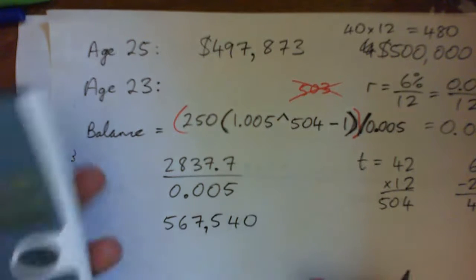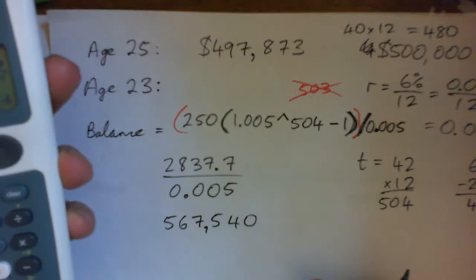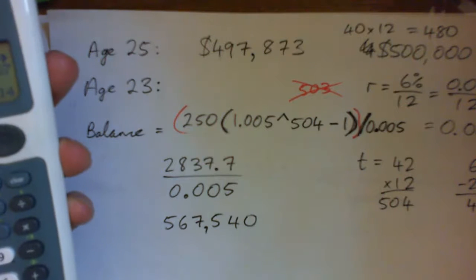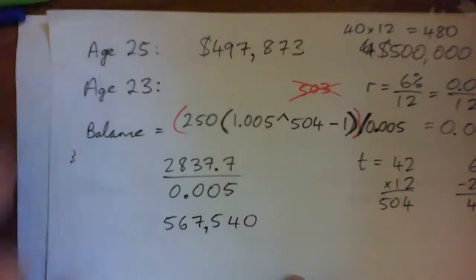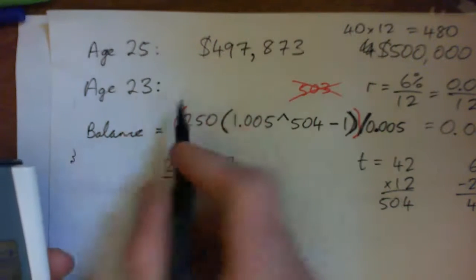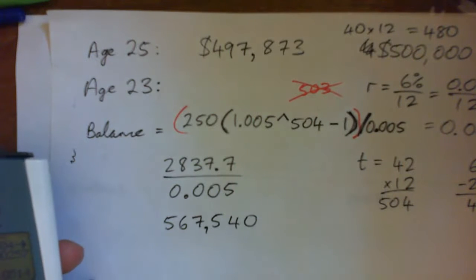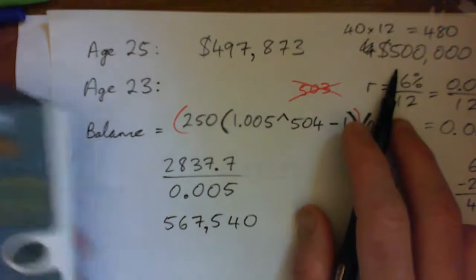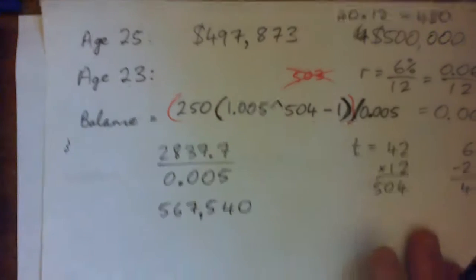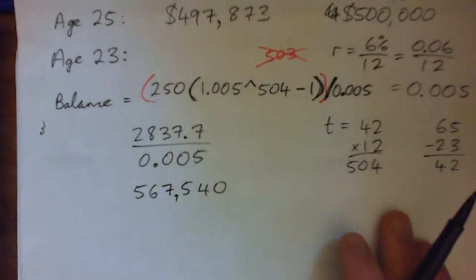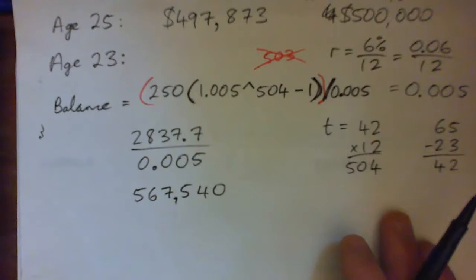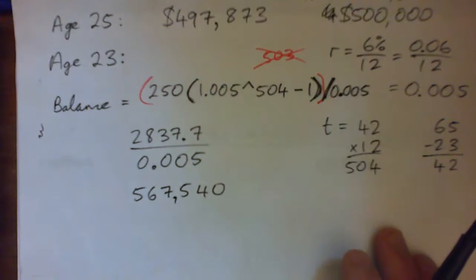So I should get $567,540. In other words, if I started work at age 23 and retired at 65, we'd have $567,000 instead of $500,000 in retirement. Either way, pretty awesome. By golly, if you've got half a million in retirement, you're good to go, I think I would say.